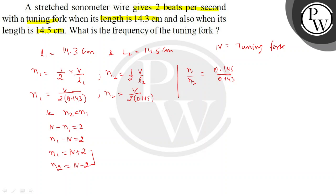Putting N1 as N plus 2 and N2 as N minus 2 in the ratio, we get (N+2)/(N-2) = 145/143.